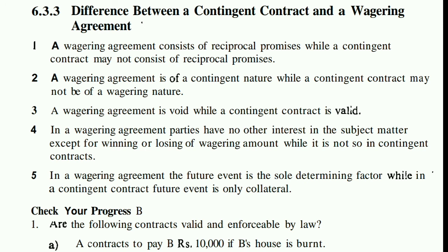The fourth point: in a wagering agreement, parties have no other interest in the subject matter except for winning or losing the wagering amount. In a wagering agreement, parties have no real interest in the subject matter — they just need to get money to win or lose.